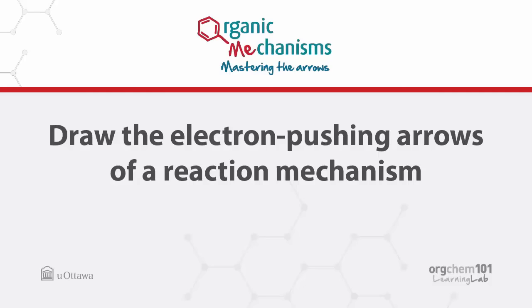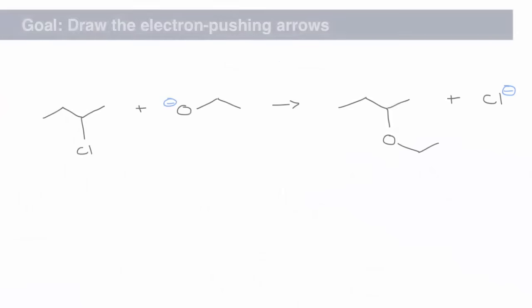In this video you'll learn to add electron pushing arrows to a reaction mechanism. Here is an example of a typical reaction. All the reactants and products have been provided.